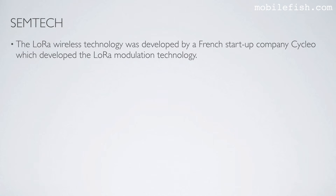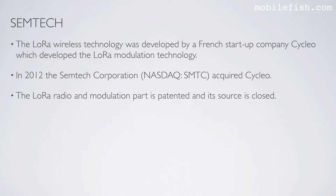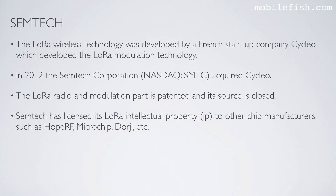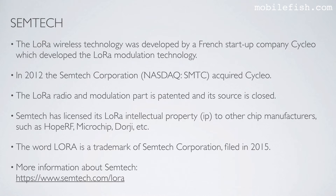The LoRa wireless technology was developed by a French startup company, Cycleo, which developed the LoRa modulation technology. In 2012, the Semtech Corporation acquired Cycleo. The LoRa radio and modulation part is patented and its source is closed. Semtech has licensed its LoRa intellectual property to other chip manufacturers such as Hope RF, Microchip, Dorji, and others. The word LoRa is a trademark of Semtech Corporation, filed in 2015. More information about Semtech can be found at the referenced location.